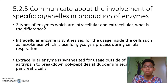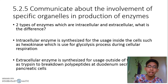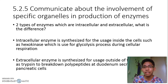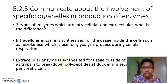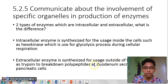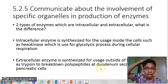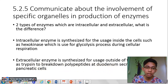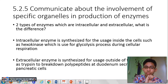Extracellular enzyme is also produced inside the cell — both types of enzyme are definitely produced inside the cell. However, extracellular enzyme is secreted out of the cell; its usage is outside the cell, not inside. An example is trypsin, which is secreted by pancreatic cells to break down polypeptides at the duodenum. So trypsin is an enzyme used outside the cell for the digestion process.